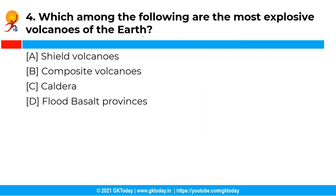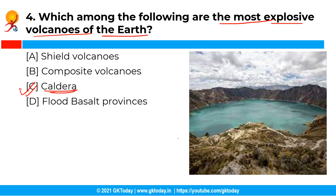The next question is: which among the following are the most explosive volcanoes of the earth? The correct answer is option C — caldera. Calderas are known as the most explosive volcanoes of the earth and they tend to collapse on themselves. These collapsed depressions are called calderas.